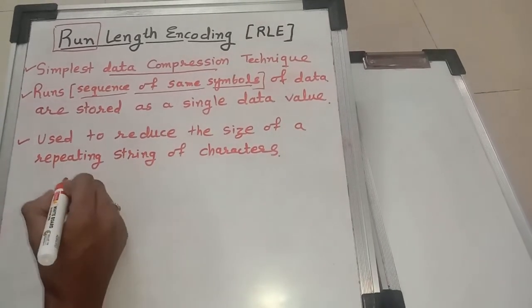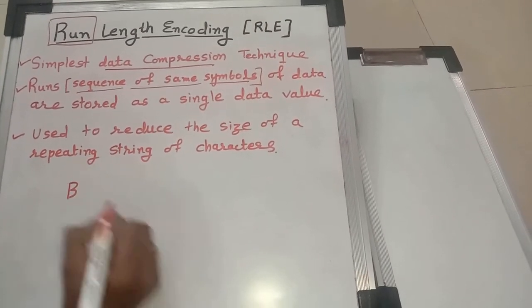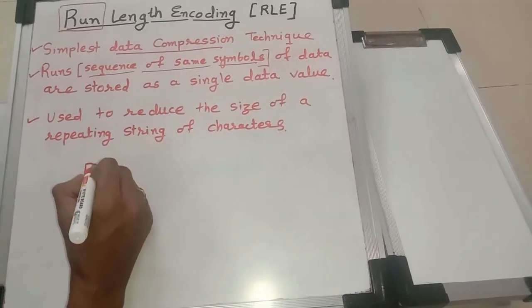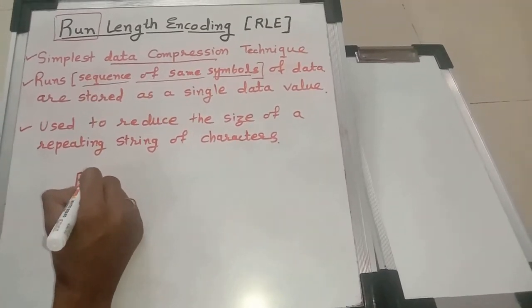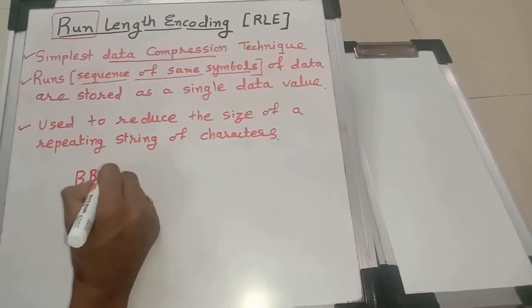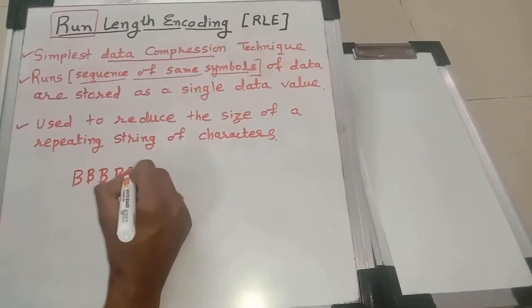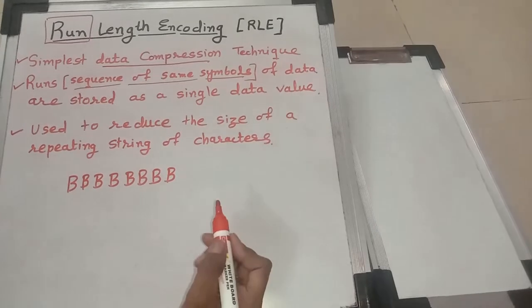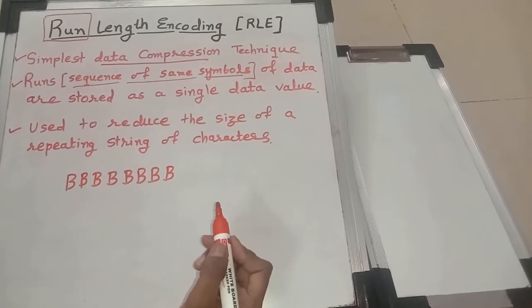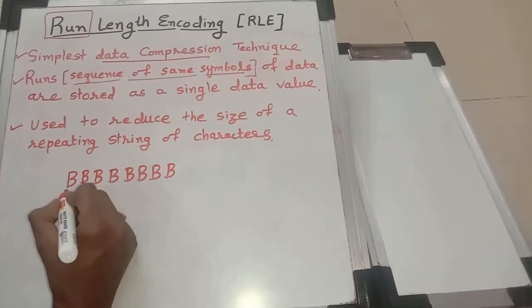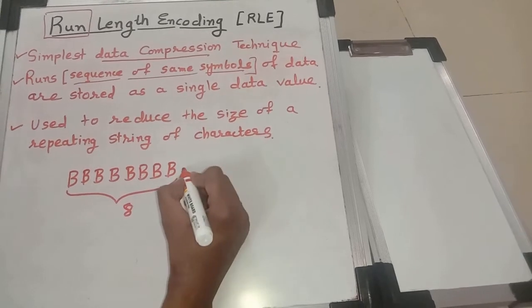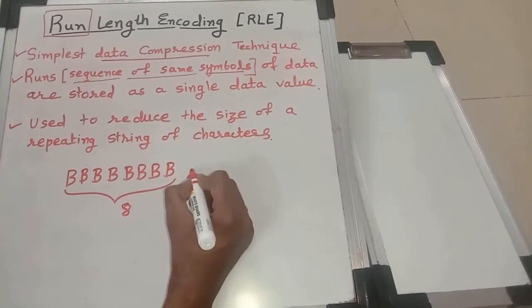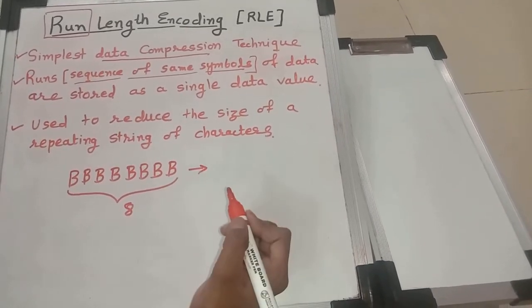We can understand this with the help of an example. Consider the sequence of B symbols which is occurring 8 times. This sequence of symbols is repeating 8 times.